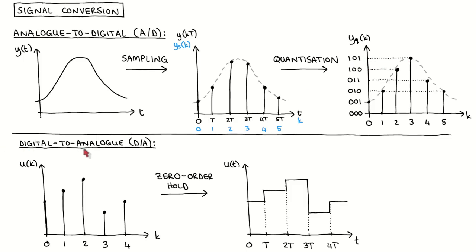For digital-to-analog conversion, digital processors use zero-order hold circuits. The idea is simply to take the value of the discrete time signal at a certain sampling instant and keep it constant for the subsequent sampling period. The result is a continuous time signal, meaning the resulting signal is defined for all time.